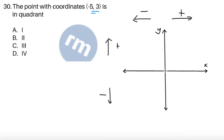So since we're going to go to the left because x is negative, so we're going to move left, and then 3 is positive, so we're going to go up. So since we're moving left and up, we're going to end up in this quadrant, and this quadrant is quadrant 2.